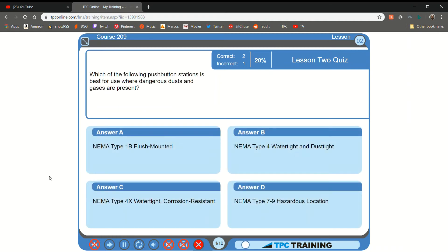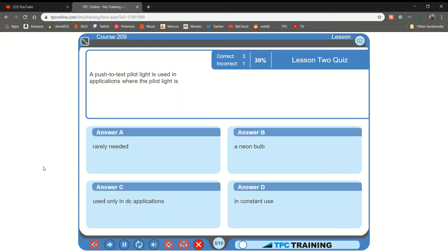Which of the following push-button stations is best for use where dangerous dusts and gases are present? A. NEMA Type 1B flush-to-test pilot light is used in applications where the pilot light is... A. Rarely needed... B. That is correct.